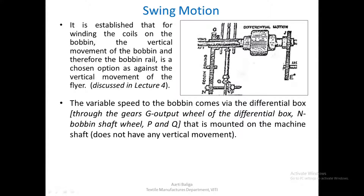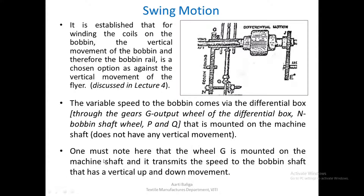But when it drives the bobbin and the bobbin shaft through G and N and P and Q, we must remember that this particular shaft, along with the bobbins, has got a vertical movement up and down. One must note here that the wheel G is mounted on the machine shaft and it transmits the speed to the bobbin shaft that has a vertical, up and down, movement.